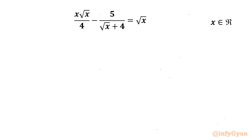Welcome back to InfiGyaan friends. In today's video we are having one very interesting question from rational equations. The given equation is x√x over 4 minus 5 over (√x + 4) equal to √x, where we have to find out real solutions only.